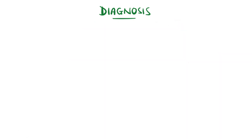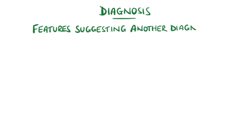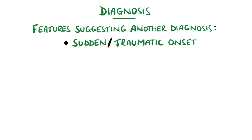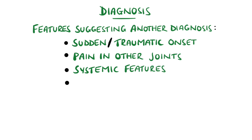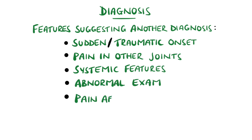Certain features point to an alternative diagnosis, such as a sudden onset of pain, especially after trauma, the presence of pain in other joints, systemic features like fever, an abnormal knee examination, or if the pain persists after rest or at night.